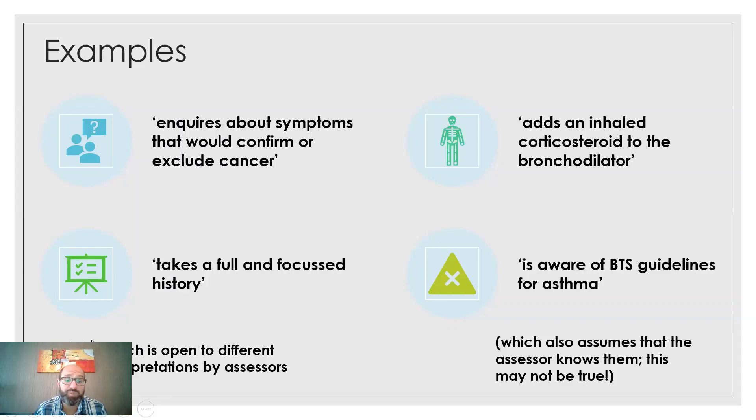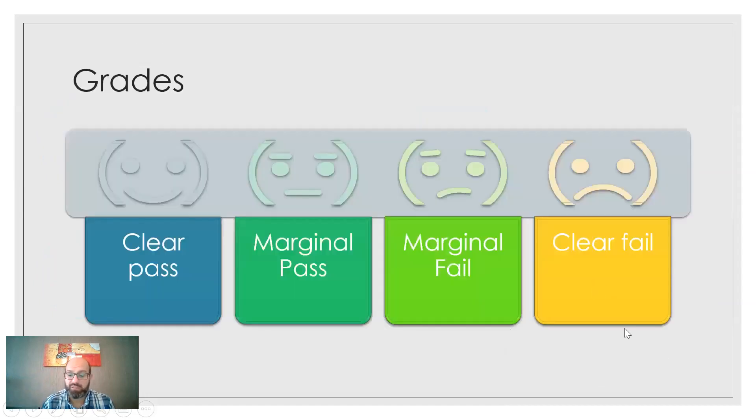Instead of writing that the candidate should be aware of the British Thoracic Society guidelines about asthma management, you simply put that the candidate needs to add corticosteroids to the bronchodilators the patient is already using. Because you want to prevent assumptions and reduce the variety and differences among the assessors. If you use this form, you assume all the assessors in all the floors or mirrors of the OSCE exam have the same and updated knowledge. Please put it very simply and remind them of what you want to assess.